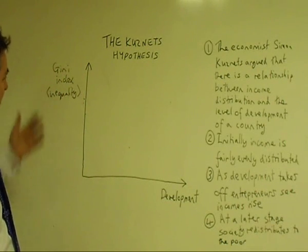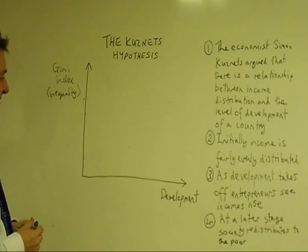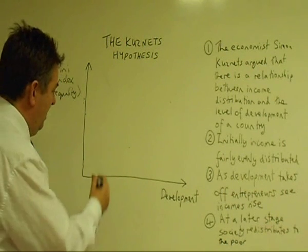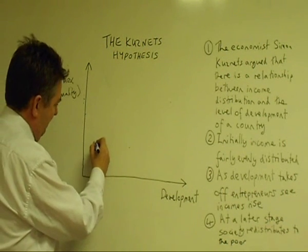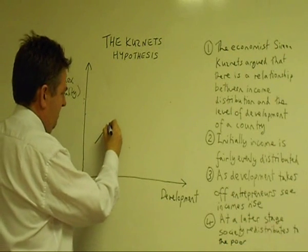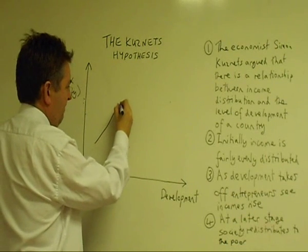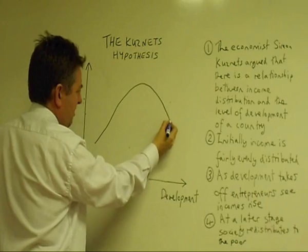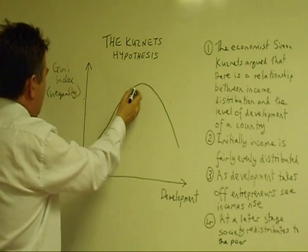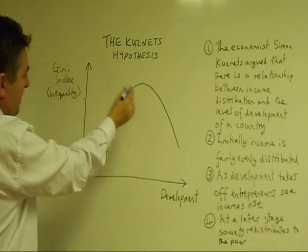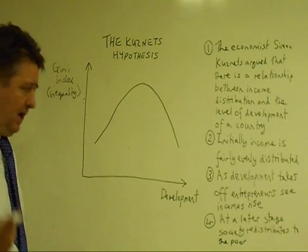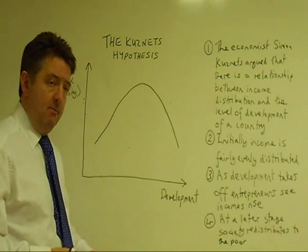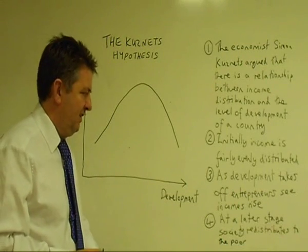The y-axis is a Gini Index showing inequality and the x-axis is development. At a low level of development, there's quite a lot of equality. Then, as we go through the development stage, we get a high level of inequality. And then, as society becomes fully developed, the inequality falls.